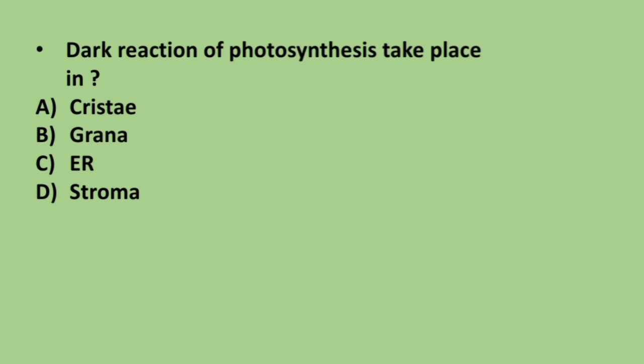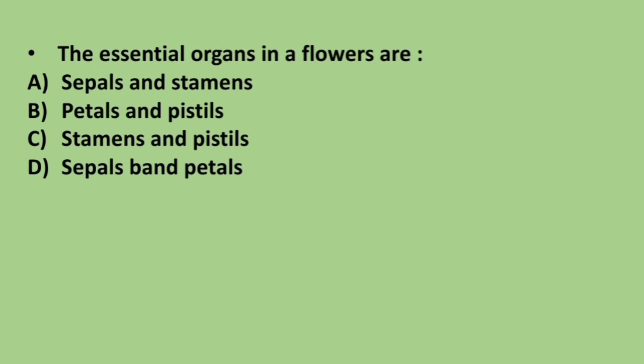Next question: dark reaction of photosynthesis takes place in — options are crista, grana, endoplasmic reticulum, and stroma. The correct answer is option B, stroma.